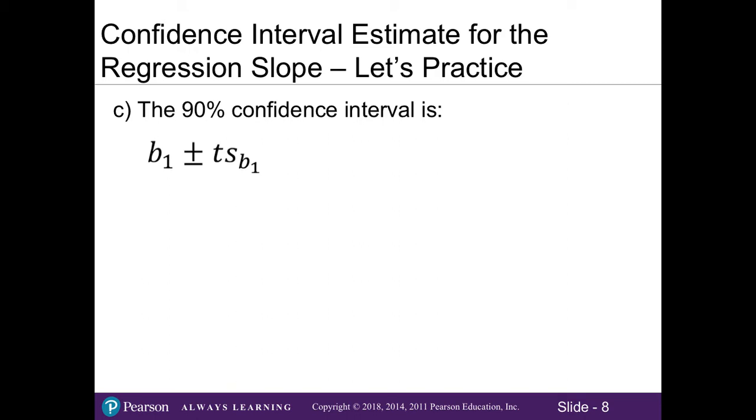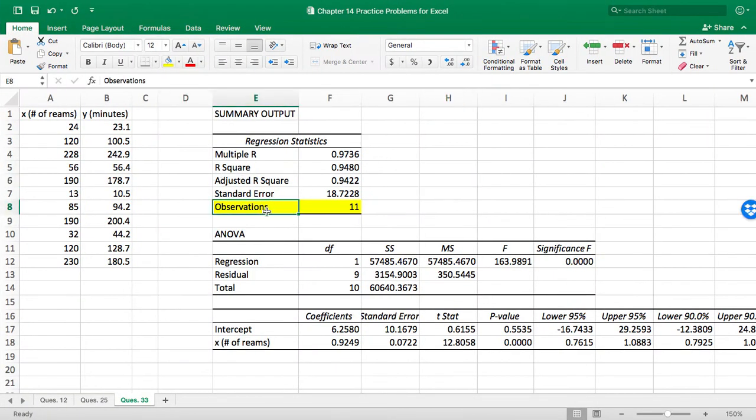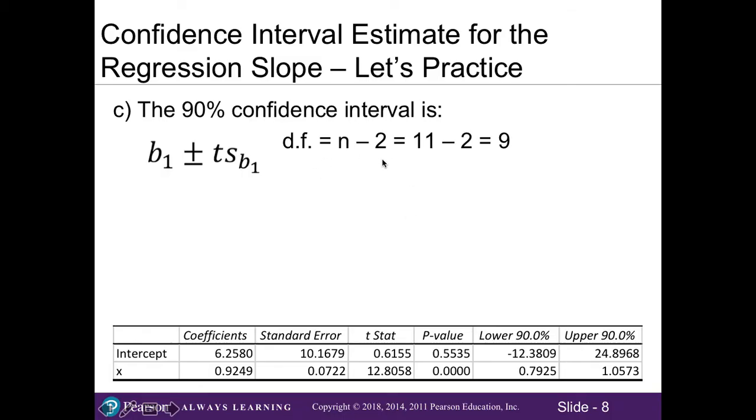So for Part C, we'll go ahead and do the 90% confidence interval. Here's our formula where we will take our slope plus or minus the critical t-value times our standard error. Two out of the three parts of this formula was found in our regression analysis using Excel. So here's our data from Excel. And then to get our critical t-value, we will also use Excel. And then so our degrees of freedom for this confidence interval estimate is n minus 2. So if we looked at our Excel data, we can see that the number of observations was 11. That's our sample size. Or if you wanted to, you can count how many data points we have here. In this case, there are 11 data points for our x and y variables.